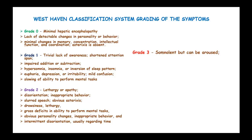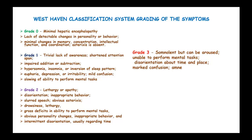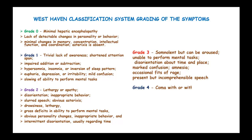In grade 3, there is somnolence but the patient can be aroused, unable to perform mental tasks, disorientation about time and place, marked confusion, amnesia, occasional fits of rage, and present but incomprehensible speech. In grade 4, there is coma with or without response to painful stimuli.